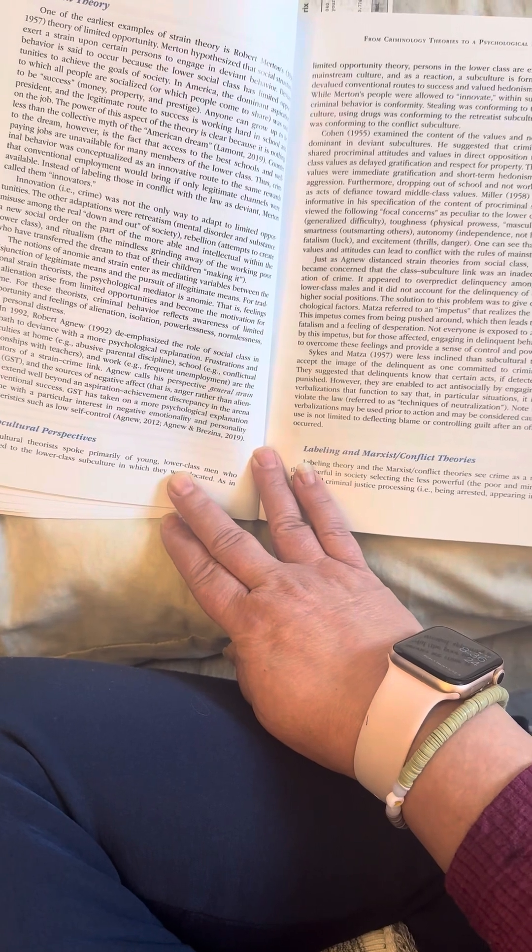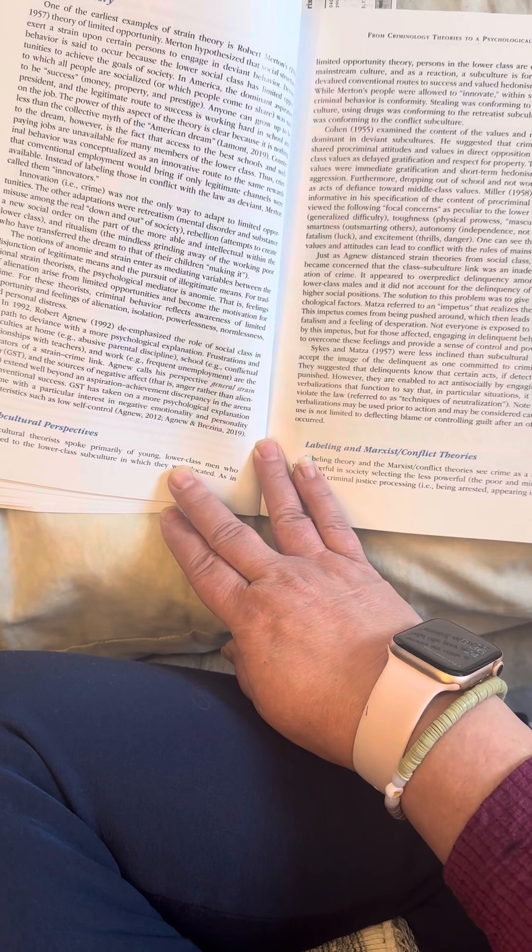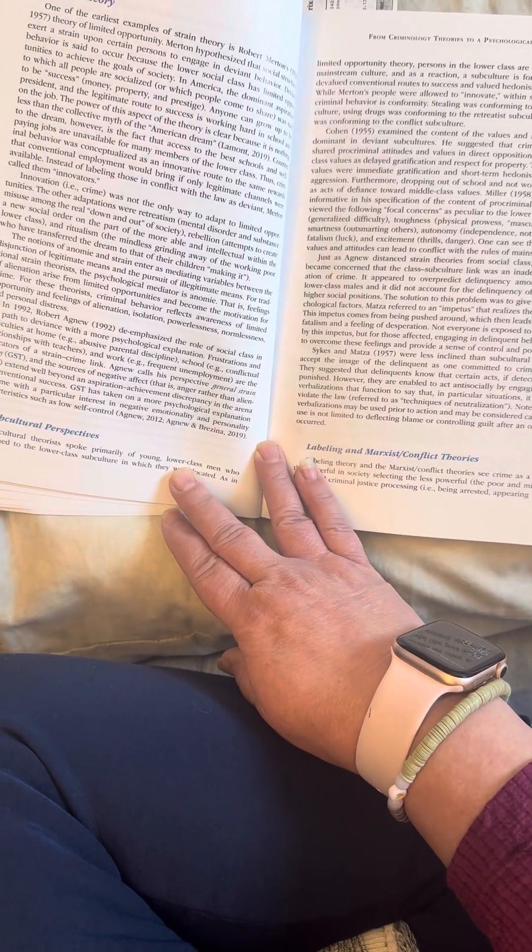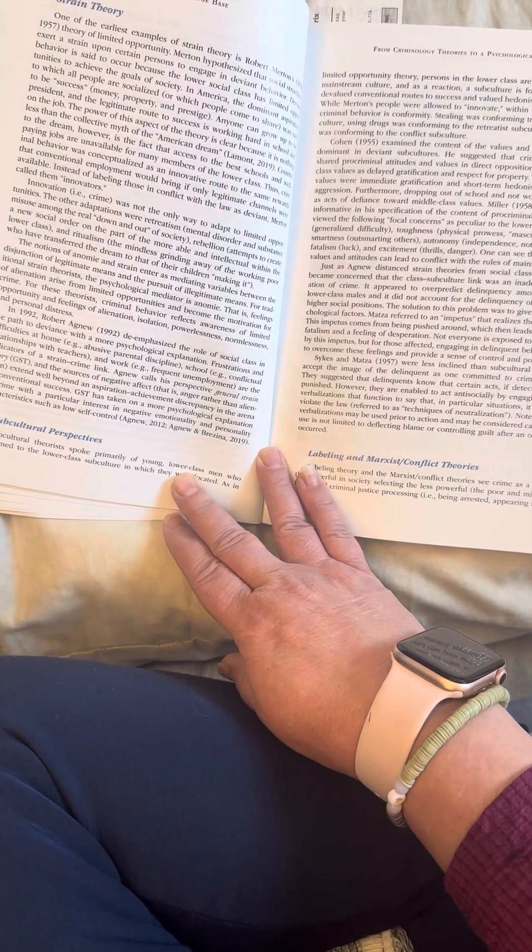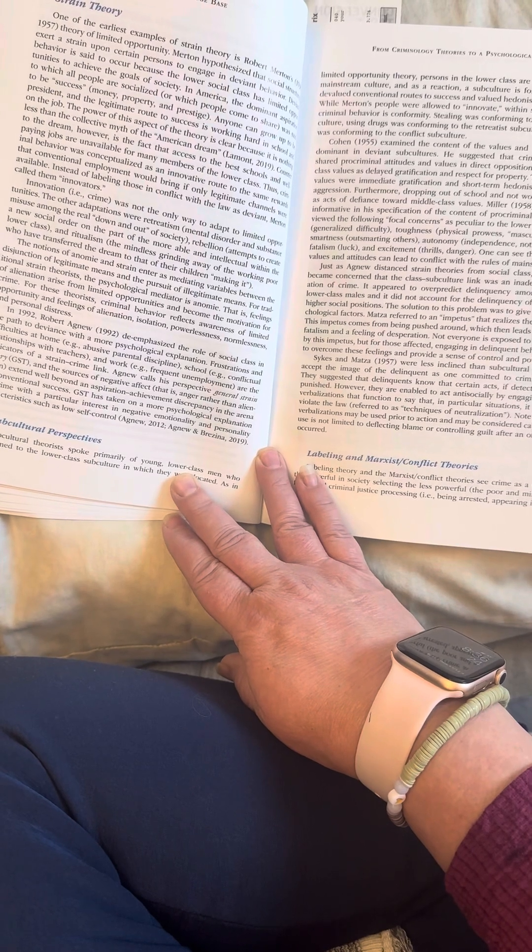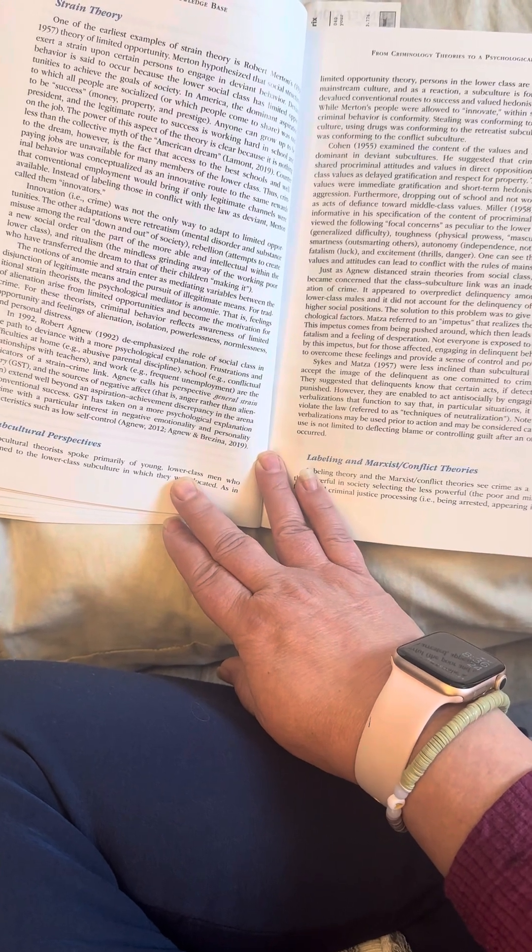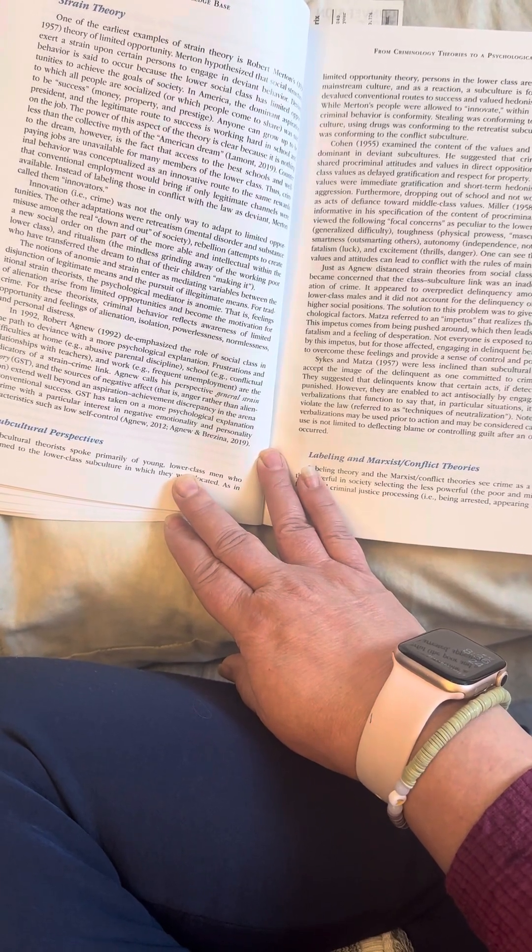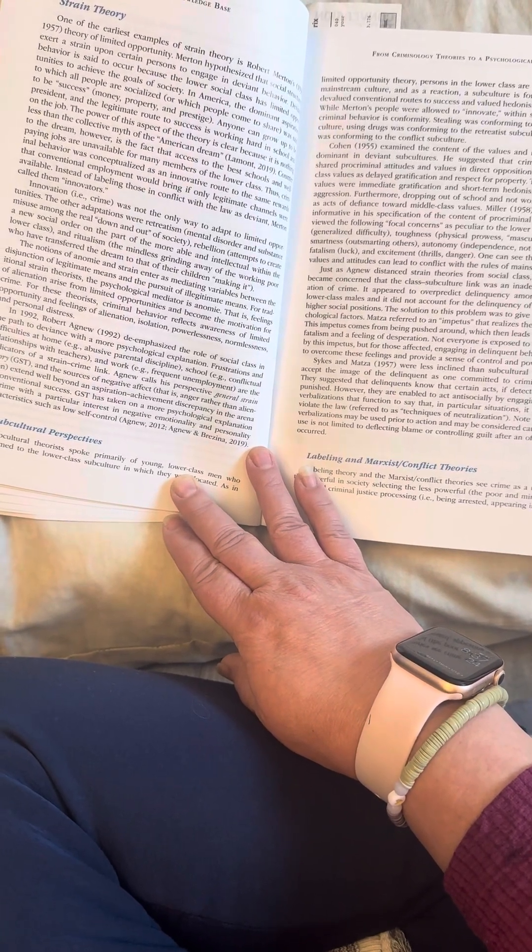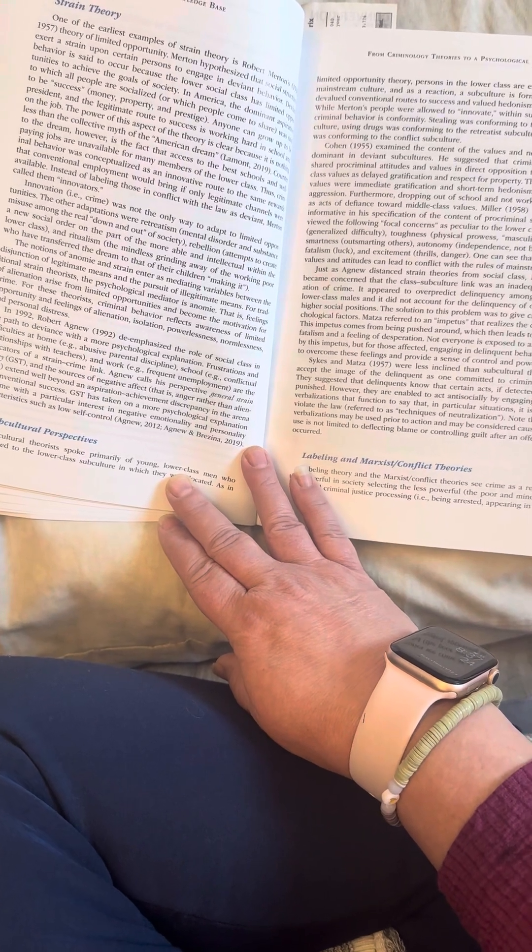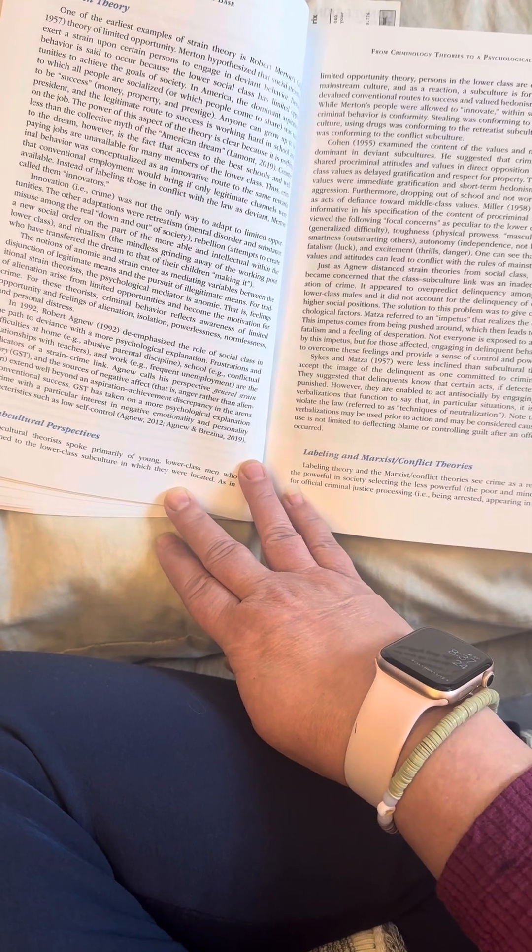Example, abusive parental discipline, school, example, conflictual relationships with teachers and work. Example, frequent unemployment are the indicators of a strained crime link. Agnew calls his perspective general strain theory, GST, and the sources of negative affects, that is, anger rather than alienation, extend well beyond an aspiration achievement discrepancy in the arena of conventional success. GST has taken on a more psychological explanation of crime with a particular interest in negative emotionality and personality characteristics such as low self-control.